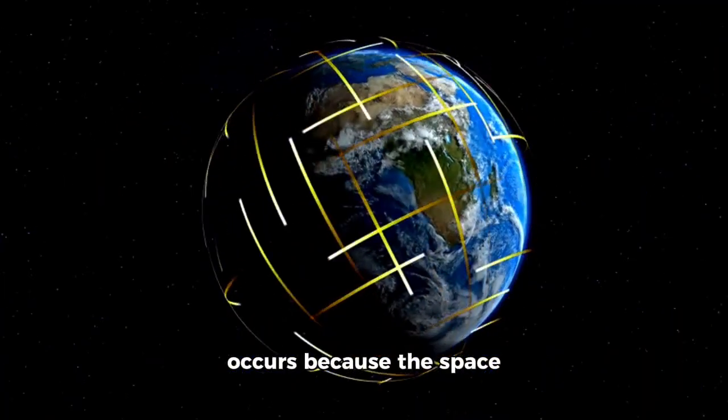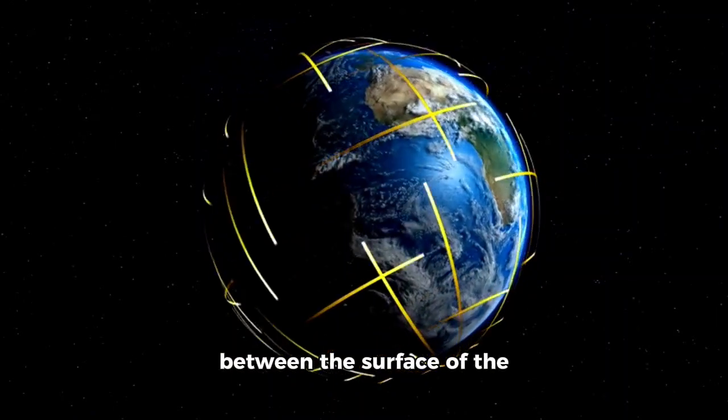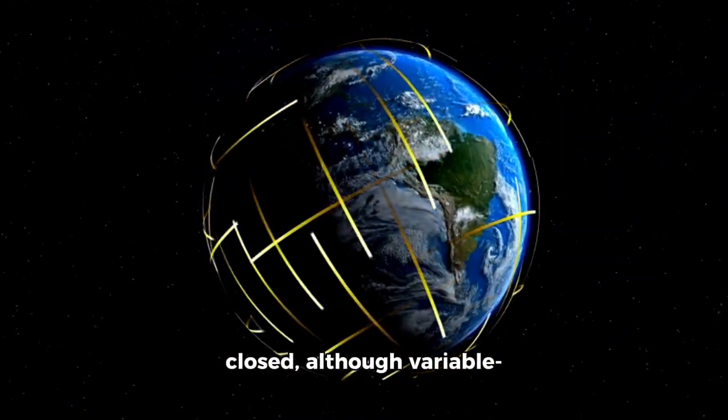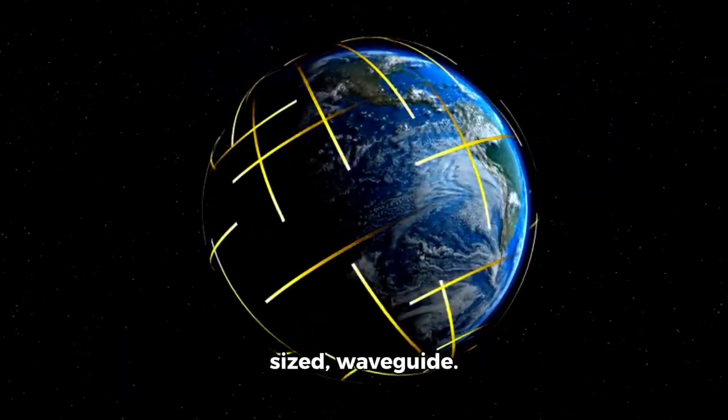The Schumann resonance occurs because the space between the surface of the Earth and the conductive ionosphere acts as a closed, although variable-sized, waveguide.